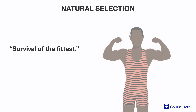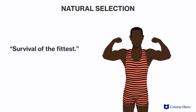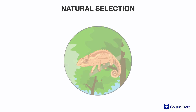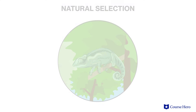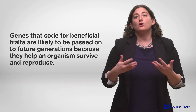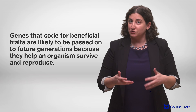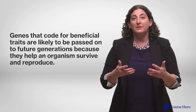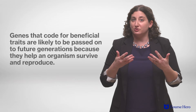The common phrase 'survival of the fittest' doesn't mean that the physically strongest survive. It means that those who are better adapted to their environment survive and reproduce. So genes that code for beneficial traits are likely to be passed on to future generations because they help the organism survive and reproduce.